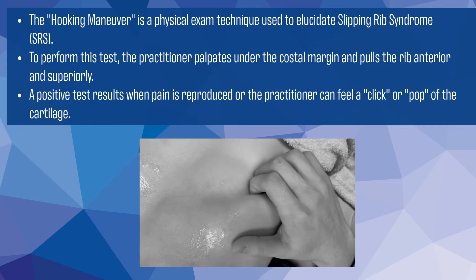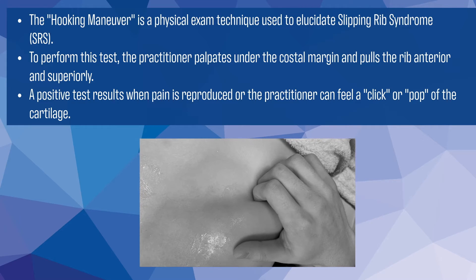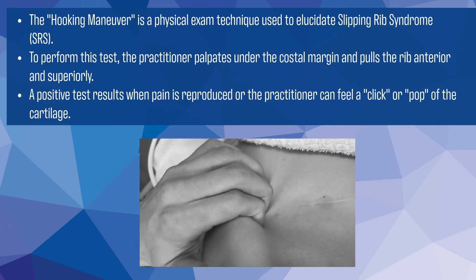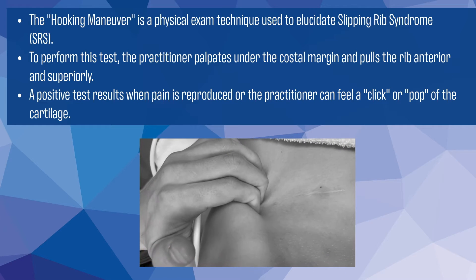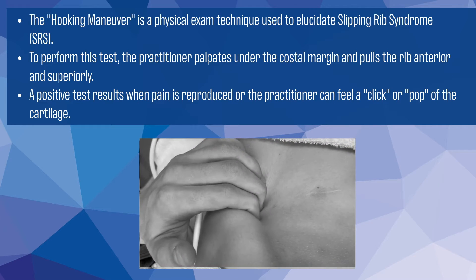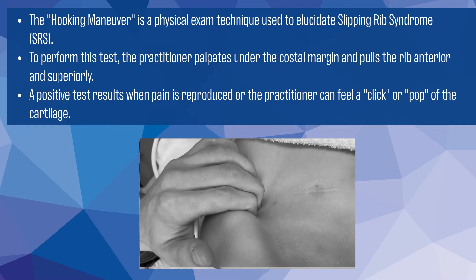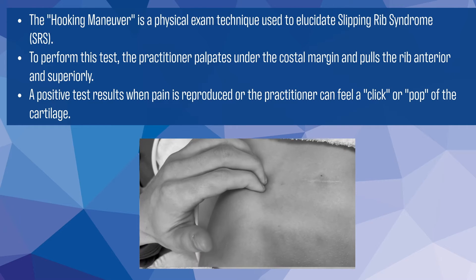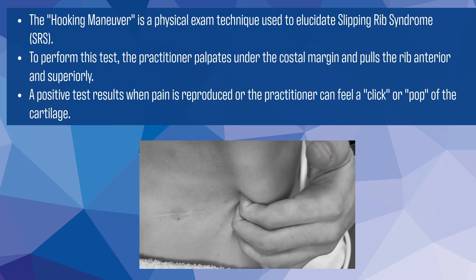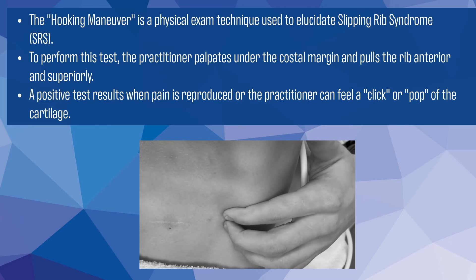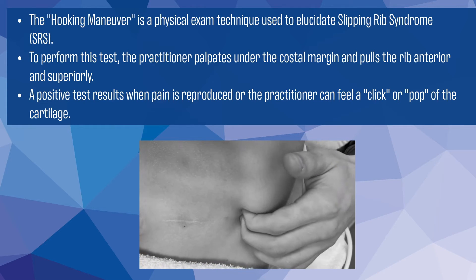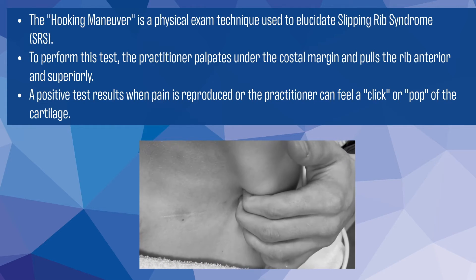The Hooking Maneuver is a valuable physical examination technique utilized in diagnosing Slipping Rib Syndrome. During this test, the practitioner palpates beneath the costal margin and gently pulls the rib anteriorly and superiorly. A positive result is indicated by the reproduction of pain or the detection of a distinctive click or pop sensation within the cartilage.